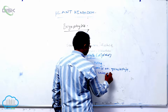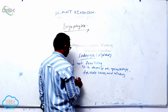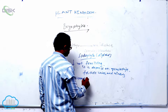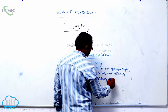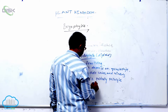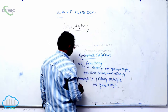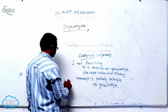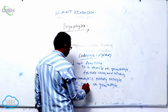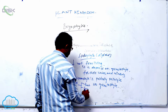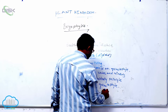The sporophyte depends on the gametophyte for water and minerals. That is why the sporophyte is partially parasitic on the gametophyte. After that, the sporophyte differentiates to form three structures: the foot, seta, and capsule.